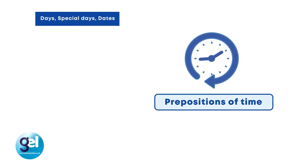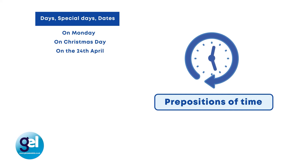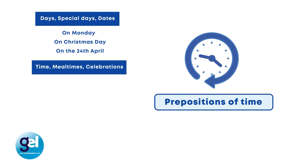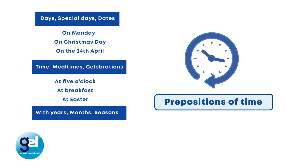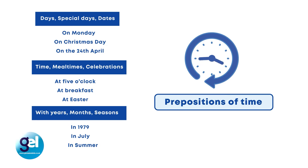Let's break the prepositions down and focus on prepositions of time. With days, special days or dates, we use on — on Monday, on Wednesday, on Christmas Day, on Easter Day, on the 24th of April. With time, meal times and celebrations, we use at — at five o'clock, at breakfast, at lunchtime, at Easter, at Christmas. With years, months and seasons, we use in — in 1979, in July, in summer, in winter. Don't be surprised to hear learners say 'in Christmas' and 'on July.' Categorising prepositions like this is useful for learners, and posters in the classroom are also a useful reference tool.